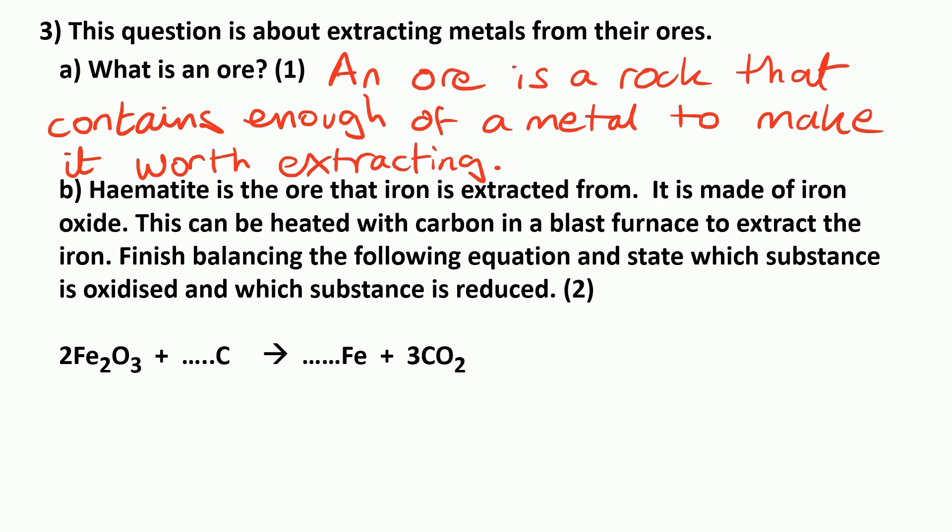Question B. Hematite is the ore that iron is extracted from. It is made of iron oxide. This can be heated with carbon in a blast furnace to extract the iron. Finish balancing the following equation and state which substance is oxidized and which substance is reduced.